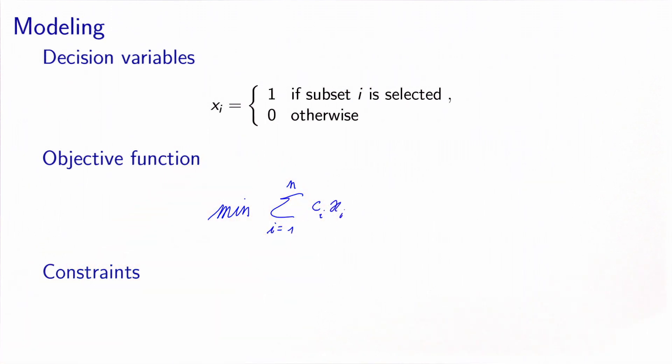And now we need to make sure that each element in U is made available. So for any j in U, we need to make sure that it is available. And it can be available from any subset that has been selected. So to know if it is available or not, we need to look at the sum over all subsets of a_ij x_i.